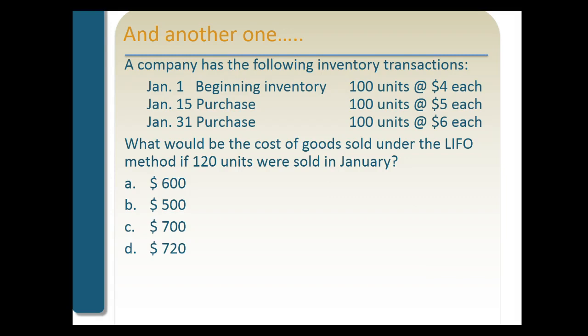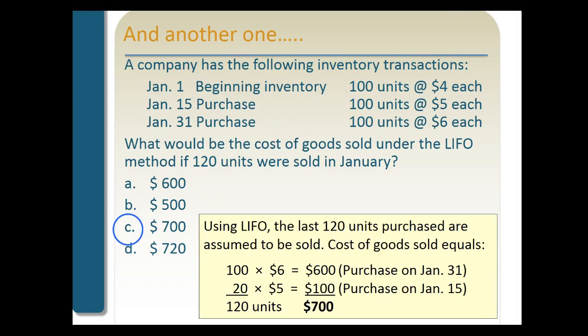What would be the cost of goods sold under the LIFO method for the same transactions? With LIFO, the last ones in are the first ones sold. The last purchase was January 31st: 100 units at $6. Then we take 20 units from the January 15th purchase at $5. So the cost of goods sold would be $700. As you can see, there's a significant difference between FIFO and LIFO — both the inventory on the balance sheet and cost of goods sold are altered between the two methods.